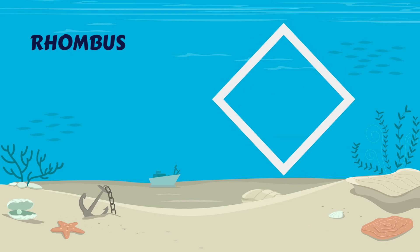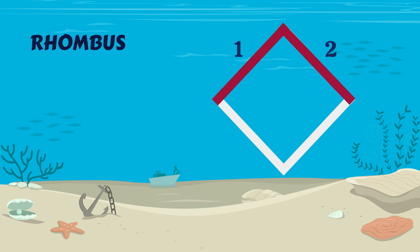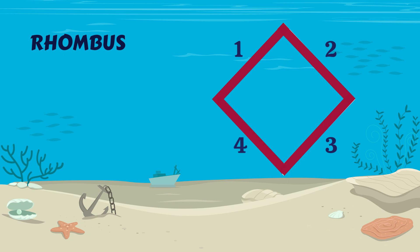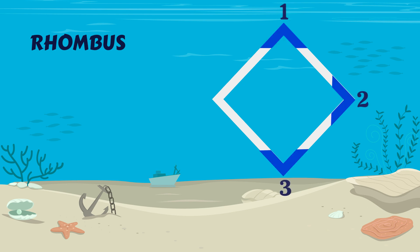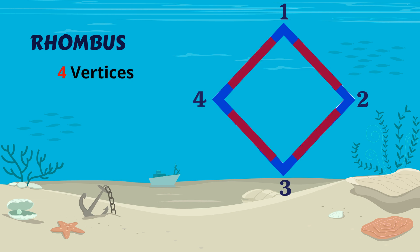Rhombus. Let's count the number of sides. One, two, three, four. A rhombus has four sides. Let's count the vertices. One, two, three, four. A rhombus has four vertices and four sides.